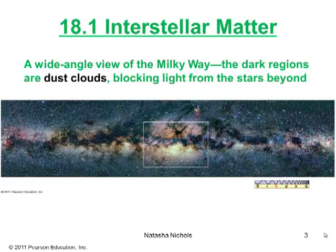This wide-angle view of our Milky Way galaxy shows the dark regions, which are dust clouds. Dust clouds are basically, just like the name implies, dust in our line of sight that blocks light from the stars beyond. This picture is spanning nearly 180 degrees. This band contains high concentrations of stars as well as interstellar gas and dust. The white box right there shows the field of view of figure 18.4, which you can find in your book on page 449.